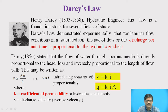This V can be replaced by Q by A. Therefore, Q divided by A, taking A to the right hand side, it becomes K times I times A. So ultimately we arrive at the equation Q equal to KIA, which is referred to as Darcy's equation.